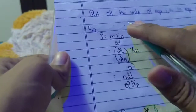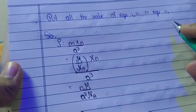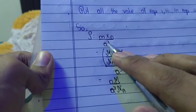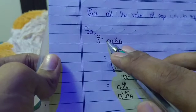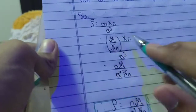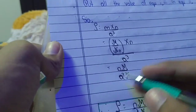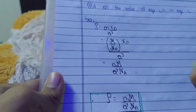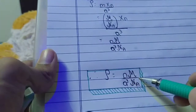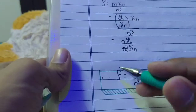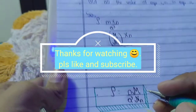Substituting all values into the density equation: density equals m·N / A³, and replacing m with M/Nₐ gives density equals (M/Nₐ)·N / A³, which simplifies to rho = N·M / (A³·Nₐ). This is the final relation: density equals number of particles times molar mass divided by the volume of the unit cell times Avogadro's number.